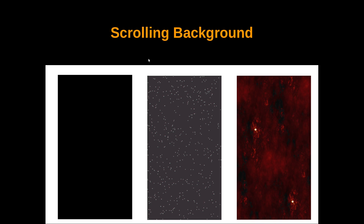For the scrolling background I knew I was going to need three pieces: a jet black background that didn't move at all, another layer with the stars so I could move that from top to bottom, and a nebula layer so the stars and nebulas could run at different speeds. You could probably find these on the internet, but I made these particular files myself.